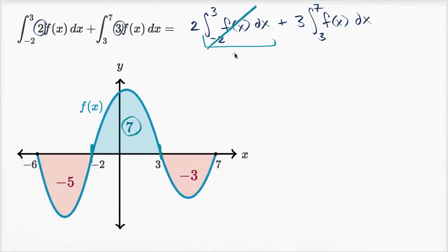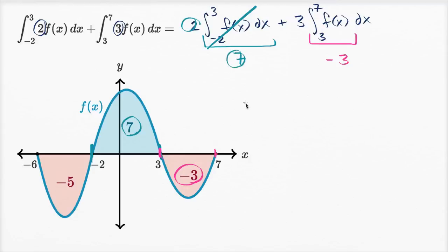So that integral equals seven. Then the integral from three to seven of f of x — we're going from three to seven — evaluates to a negative value because f of x is below the x-axis there, giving us negative three. So this all works out to two times seven, which is 14, plus three times negative three, which is plus negative nine. And 14 minus nine equals five.